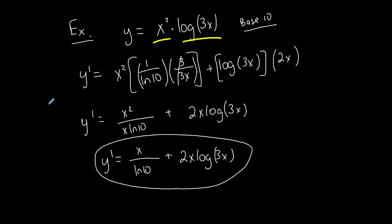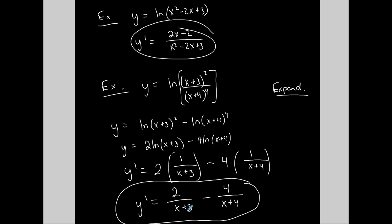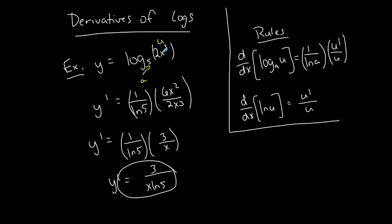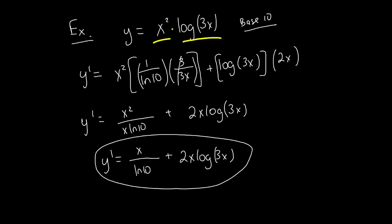Be careful with logs because of where exponents and quotients are located. Sometimes we use properties of logs to expand and simplify before finding the derivative. Depending on where the exponent is — for example, the 3 on the x squared in this last example — that 3 is not going to come to the front. Just be careful when dealing with logarithmic functions.